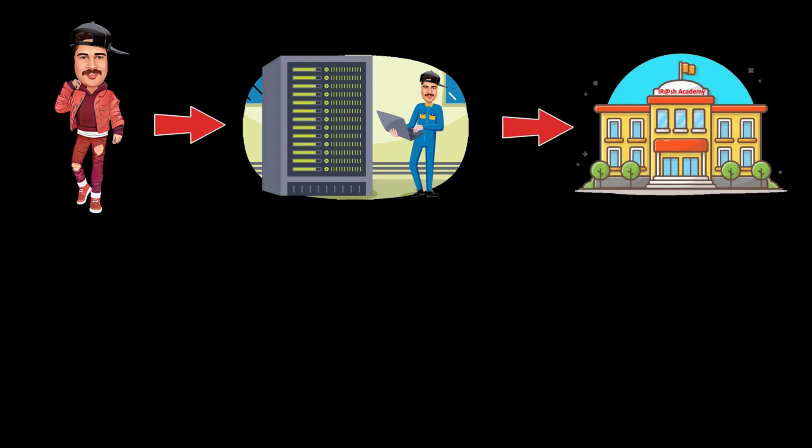Please meet Mr. James. He wants to develop his career in Cisco network engineering and he wants to be a Cisco network engineer. For that, he joined Irash Academy, one of the best institutions in his neighborhood. He started his course and began learning Cisco network engineering.